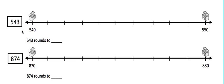I know that 543 is in between 540 — there's our 10 — and 550. So then I need to figure out what the midpoint between 540 and 550 is.